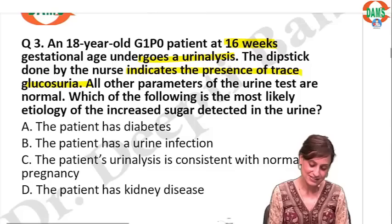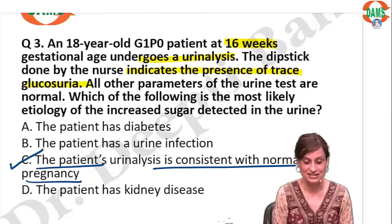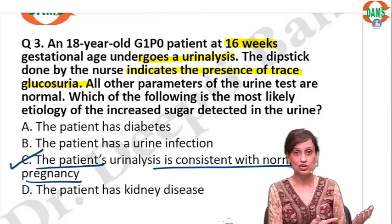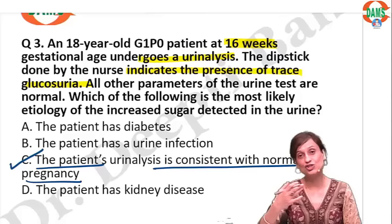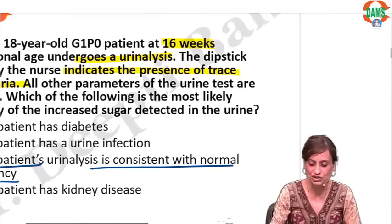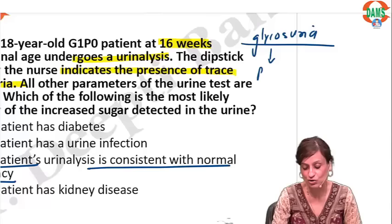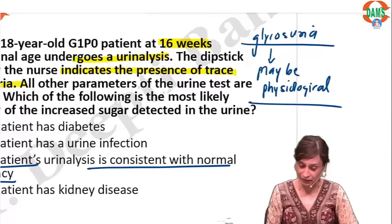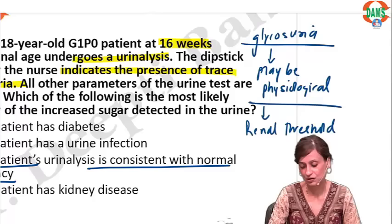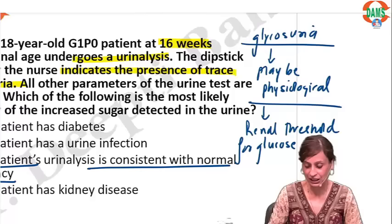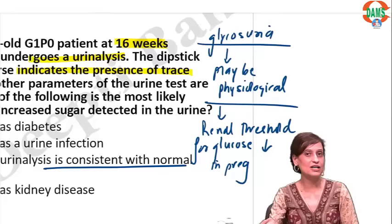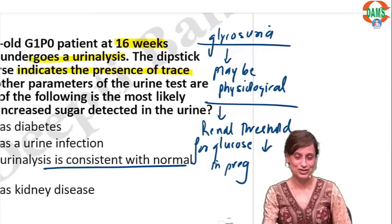The answer is C — the patient's urine analysis is consistent with normal pregnancy. The body undergoes a lot of physiological changes. Glycosuria may be physiological. Why? Because the renal threshold for glucose decreases in pregnancy, and as a result glucose starts appearing in the urine even at lower levels.